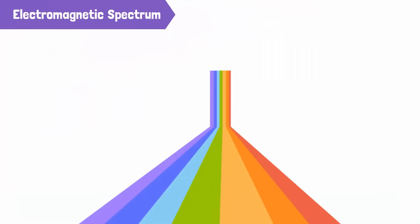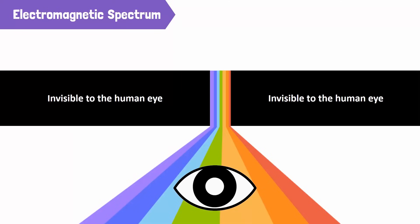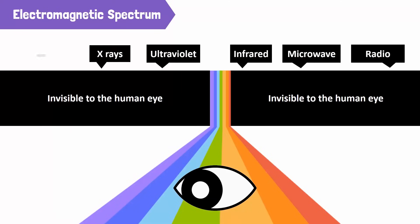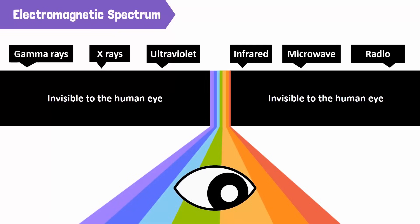When we talk about light, we usually mean visible light, which is the light that we can see with our eyes. But there are more types of electromagnetic radiation that are invisible to us, including radio waves, microwaves, x-rays, and gamma rays.